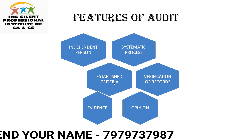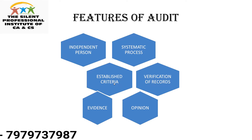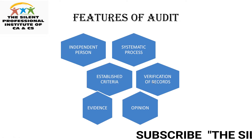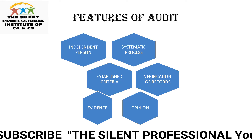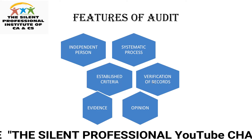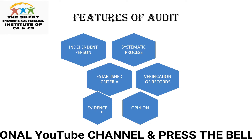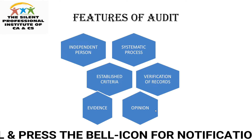The third feature is established criteria. There are certain established criteria we have to follow, such as Accounting Standards, CARO, Ind AS, IFRS, etc., whichever is applicable to the company. I will discuss these in detail later. Then comes verification of records — when we go for an audit, we verify records like vouchers, tally entries, invoices, etc., and those records are verified in order to collect evidence to frame our opinion.